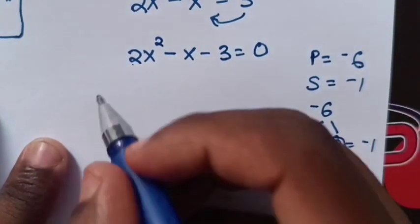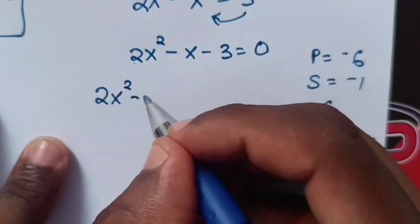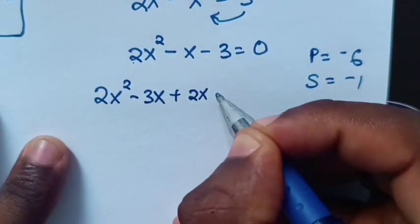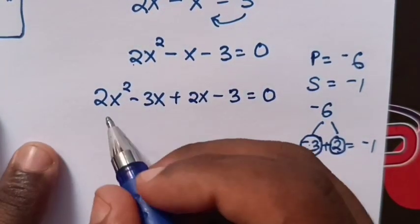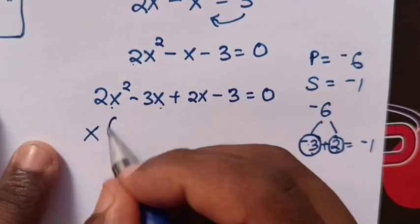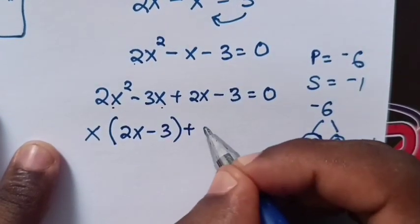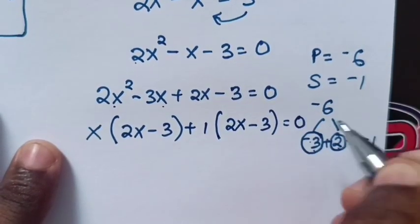So our equation will be 2x squared minus 3x plus 2x minus 3 equals 0. Now here x is common, x out of bracket 2x minus 3 bracket plus 2x minus 3 equals 0.